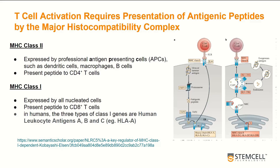MHC class 2 molecules are expressed on antigen-presenting cells such as dendritic cells, macrophages, and B-cells, and can effectively present antigens to CD4-positive T-cells. This occurs when exogenous antigens are internalized, degraded, and loaded onto class 2 molecules. In contrast, MHC class 1 molecules are expressed on all nucleated cells and present peptide antigens to CD8-positive T-cells. These peptides are derived from endogenous pools of proteins, such as viral or tumor antigens, where they are expressed, degraded, and loaded onto MHC molecules for presentation to CD8 T-cells.